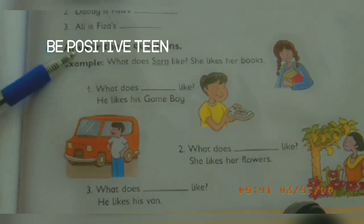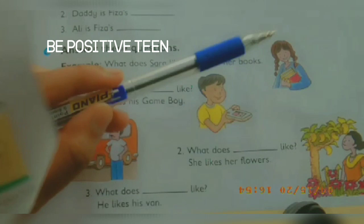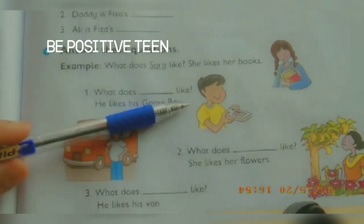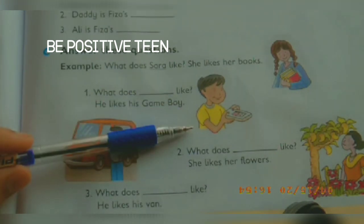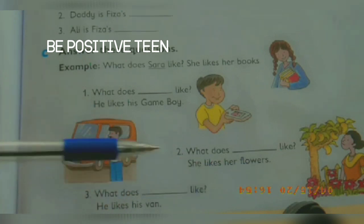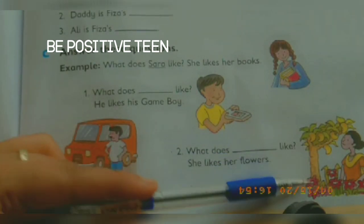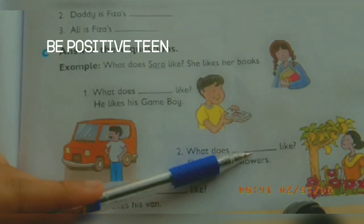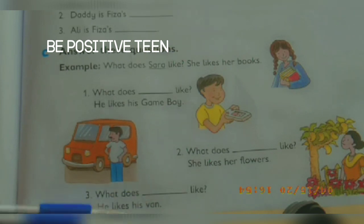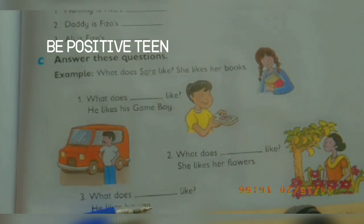Activity number C: Answer these questions. Example: What does Sarah like? She likes her books. Fizza's brother liked his game boy — his name was Ali, so write 'Ali' here. What does dash like — she likes her flowers? She is Fizza's mother, so write 'mommy' here. What does dash like — he likes his van? He is Fizza's father, so write 'daddy' here.